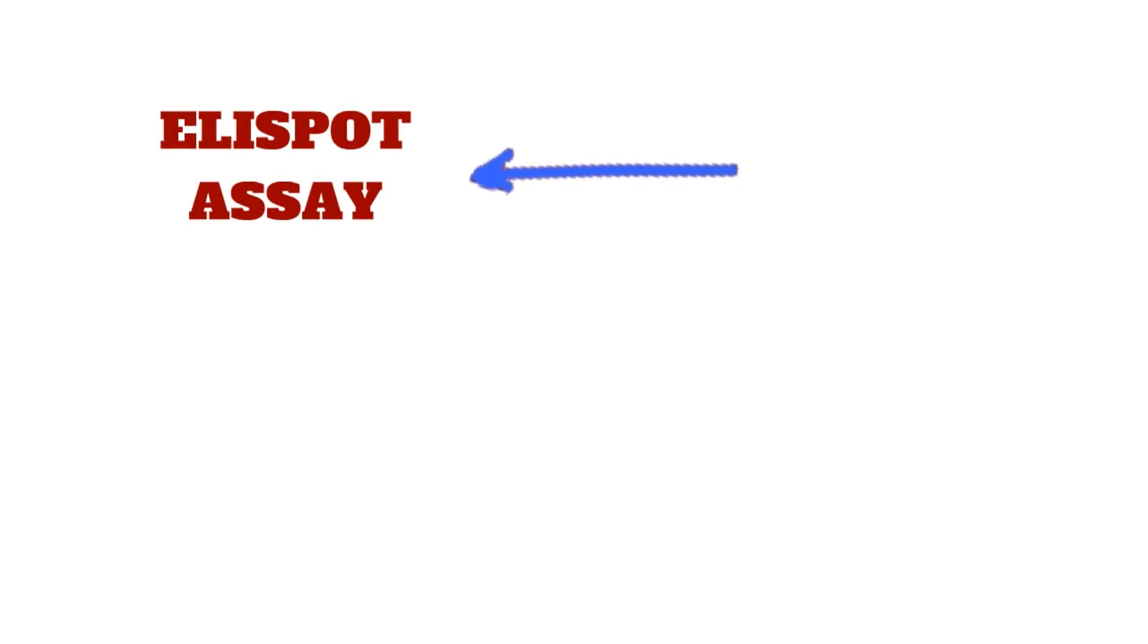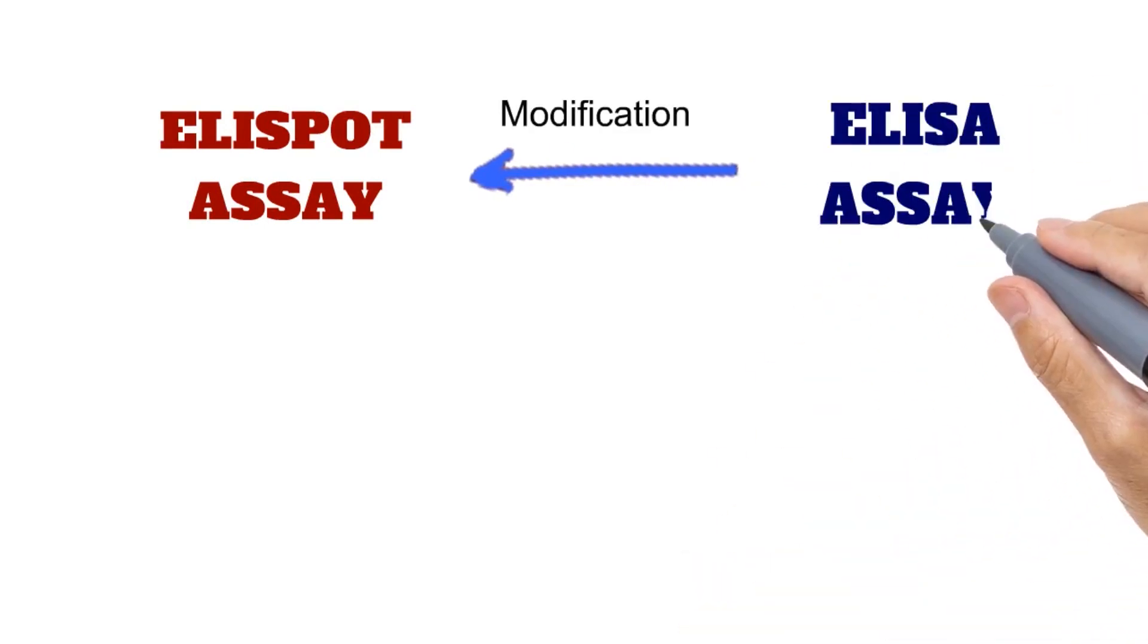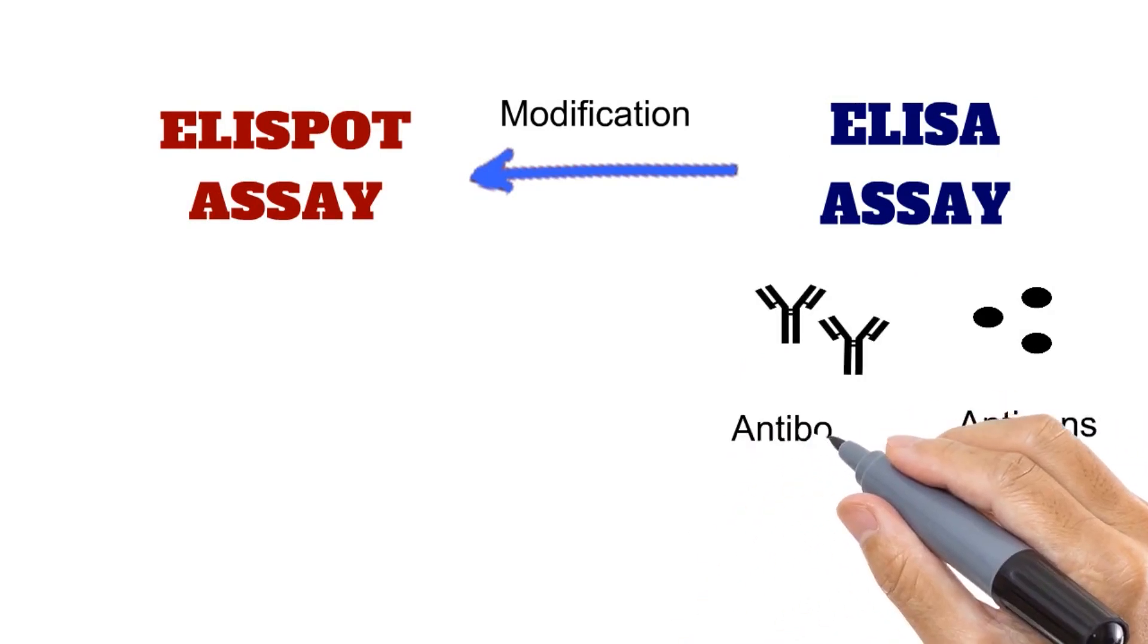ELISPOT assay is the modification of ELISA assay. ELISA assay is used to detect the specific antigens or antibodies present in the sample.